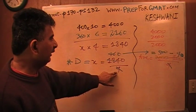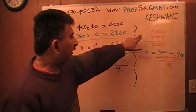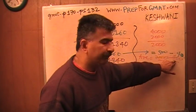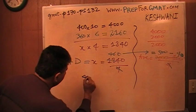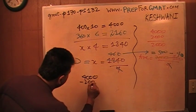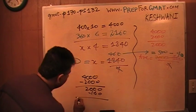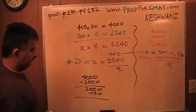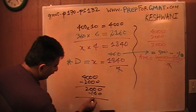Another way would have been, I would have told myself that 4,000 minus 2,160 has to be 4,000 minus 2,000, which is 2,000, minus 160. 4,000 minus 2,000 minus 160 is the same as 4,000 minus 2,160.